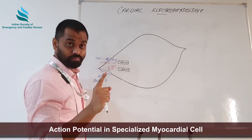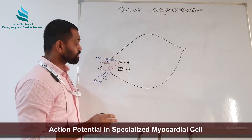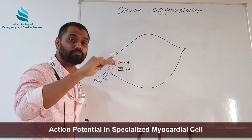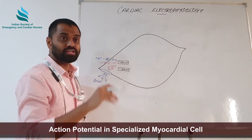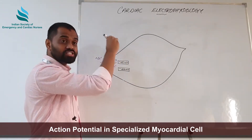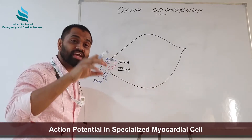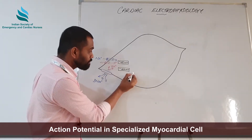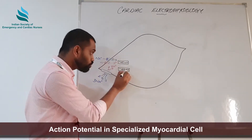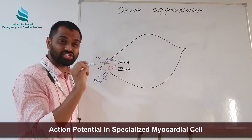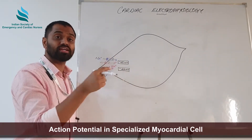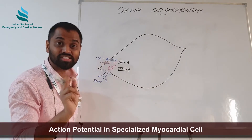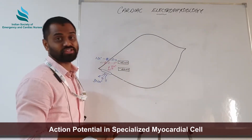Another key difference: the contractile myocardial cell was maintaining the resting membrane potential of minus 90 millivolts until it was stimulated. By trickling of cations from outside, it raised its resting membrane potential from minus 90 millivolts to threshold potential of minus 70 millivolts because it was stimulated externally. But here, no external stimulus is required — that is the property of the SA node.